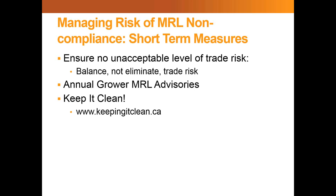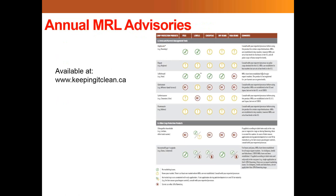That brings us to our annual MRL grower advisories and the Keep It Clean initiative. The annual MRL grower advisory is meant to advise Canadian pulse growers on application tips to help mitigate the trade risks that Gord outlined, as well as to advise on the various products of concern in any given crop year. This is available at keepingitclean.ca because it is a live document — we generally don't print out and disseminate copies; it's online and easily accessible. It's set up with the five pulse crops and corresponding products designated either a green, yellow, or red light classification.